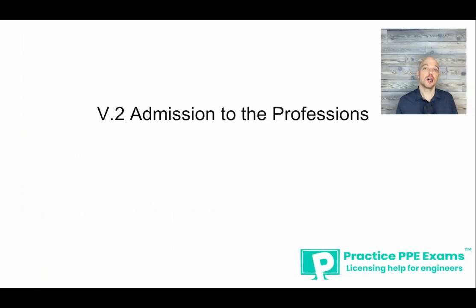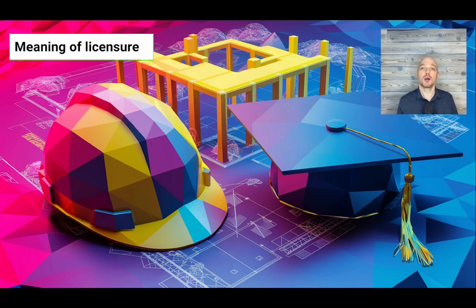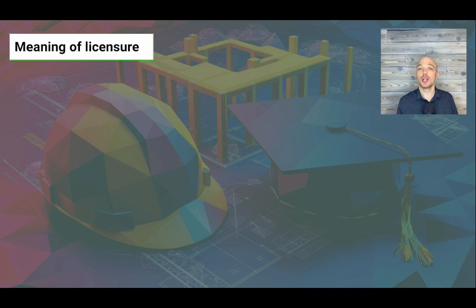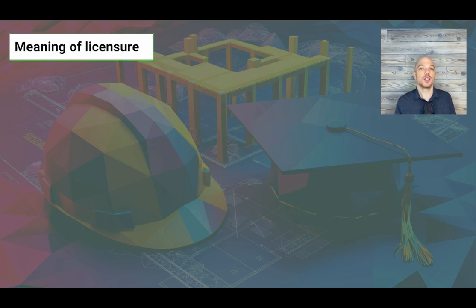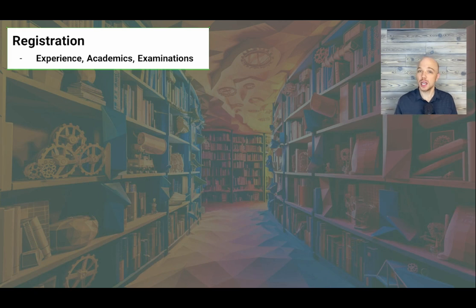Let's now dig into the topic on admission to the professions. Licensing refers to a process of obtaining a license in a regulated profession like engineering or geoscience. Going through this process is required to practice engineering or geoscience and use protected titles like P.Eng or P.Geo. The licensing process ensures professionals meet established standards of education, experience, and ethical conduct to safeguard the public interest.